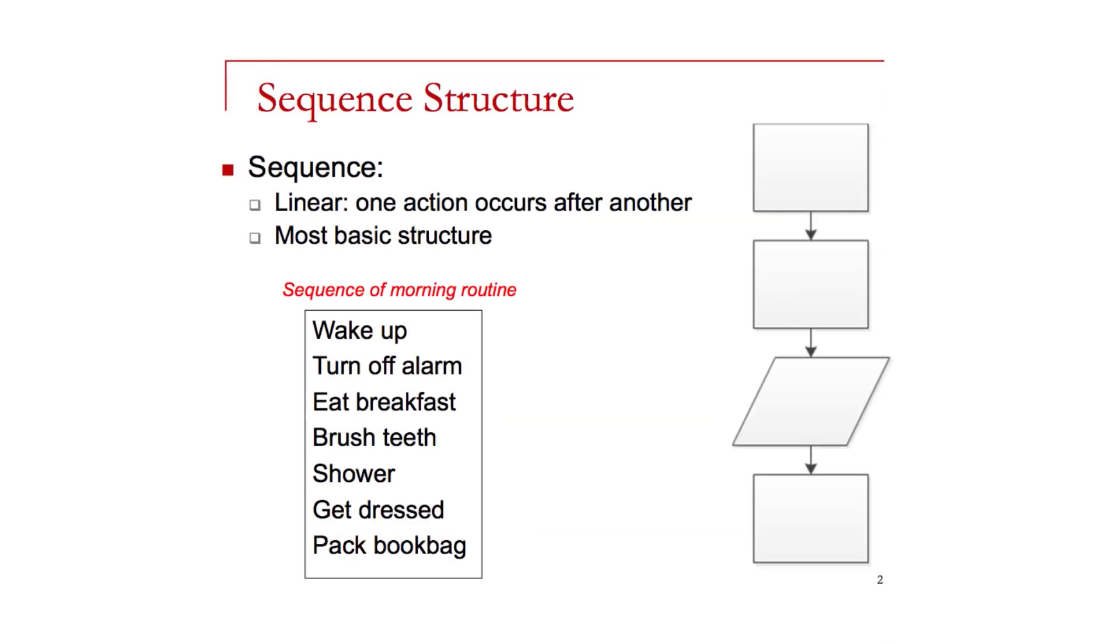Sequencing is the most basic structure, and all that sequencing refers to is a linear action of one statement or one programming expression after another. On the right, you can see these blocks. Each might represent a particular type of code that's being executed one after the other, sequences of incoming events that are being processed.